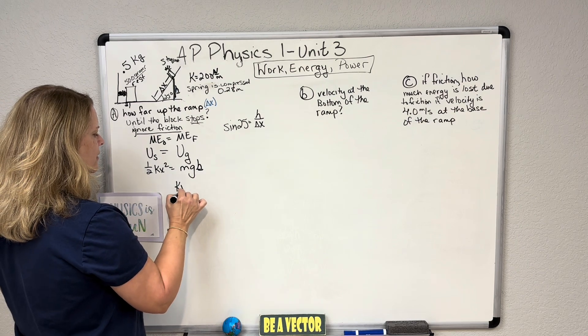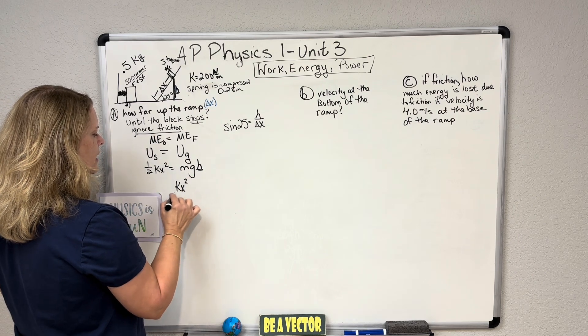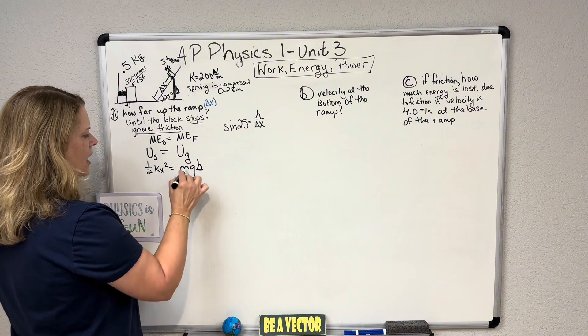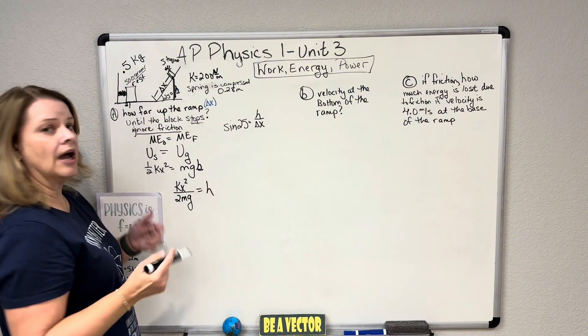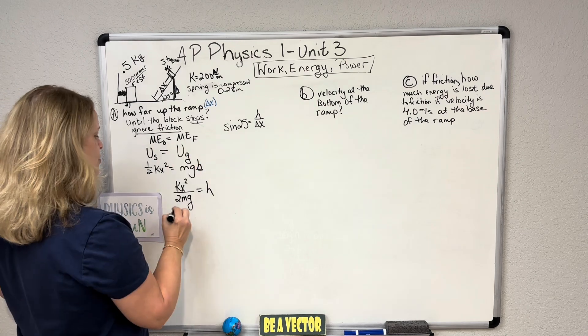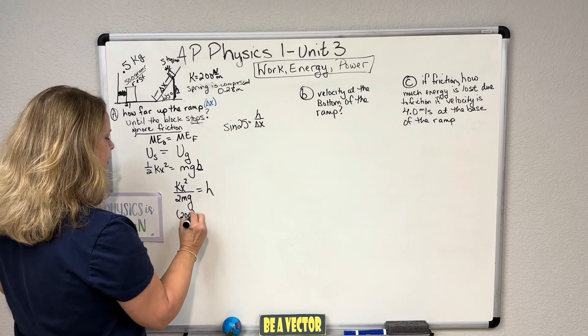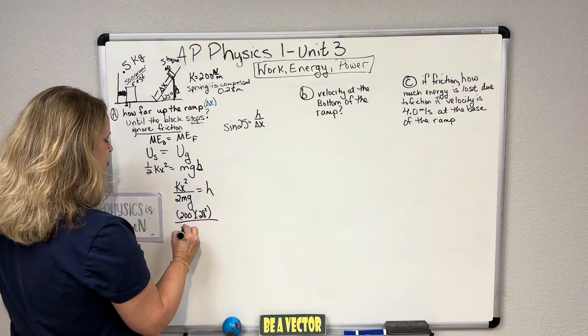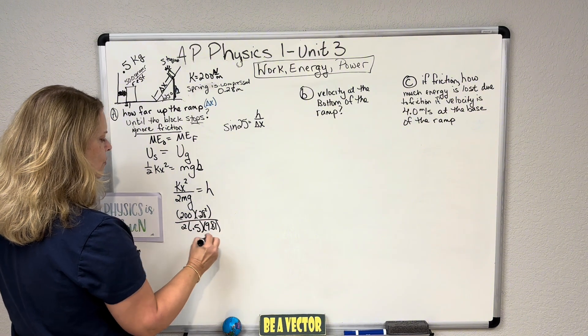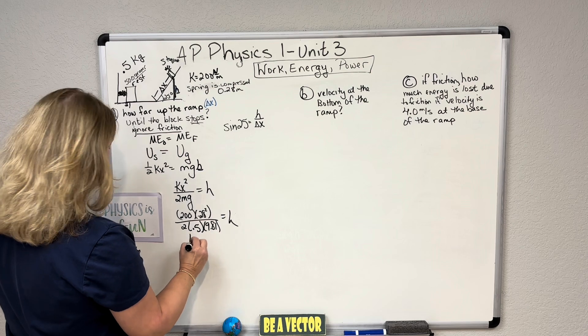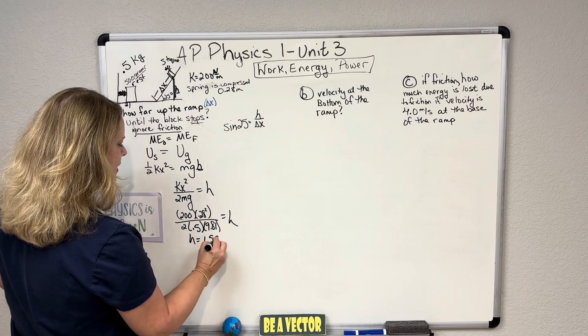I'm going to take that kx squared, divide by m and g and that's going to be my h. I'm going to put the numbers in here. k was 200, x is 0.28 squared, 2 times mass 0.5 kilograms and little g is 9.81 because we're on earth. That's going to give you an h of 1.598 meters.